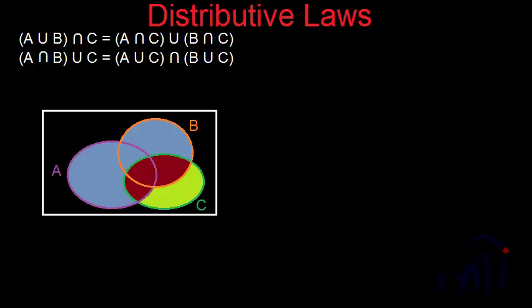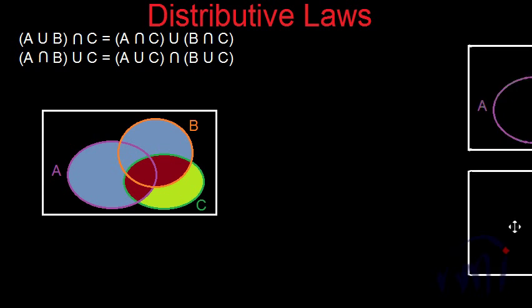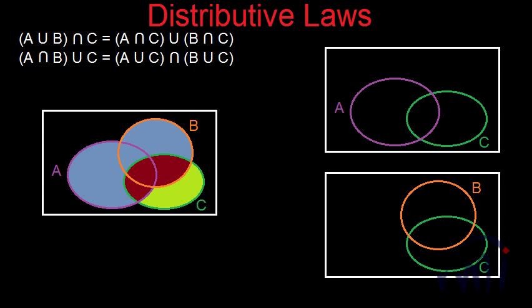Now let's understand the right hand side of that distributive law. To understand it better, I have drawn two more Venn diagrams. In the first diagram we have set A and set C, where we will represent A intersection C — which is actually represented by this portion.